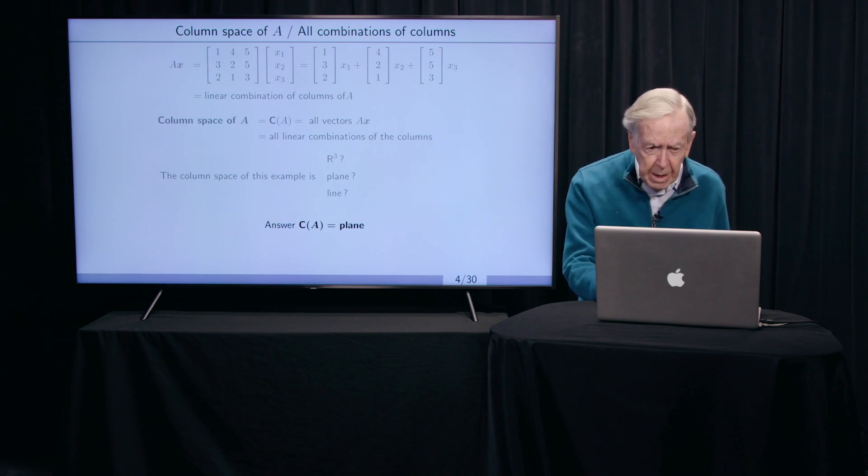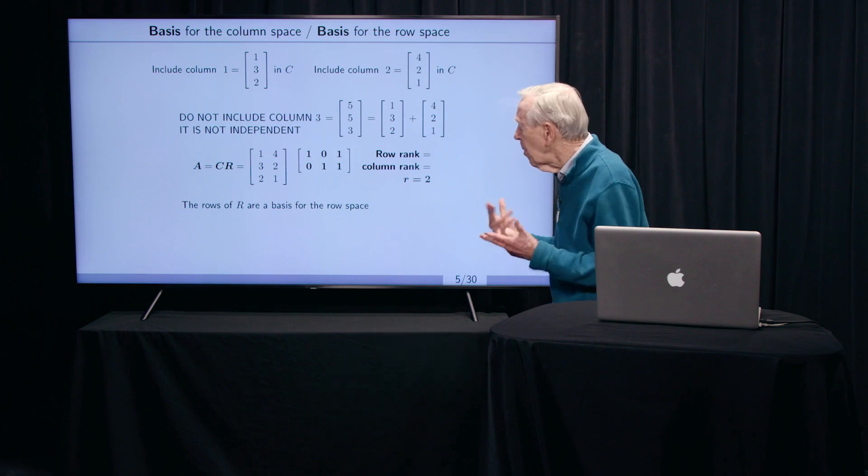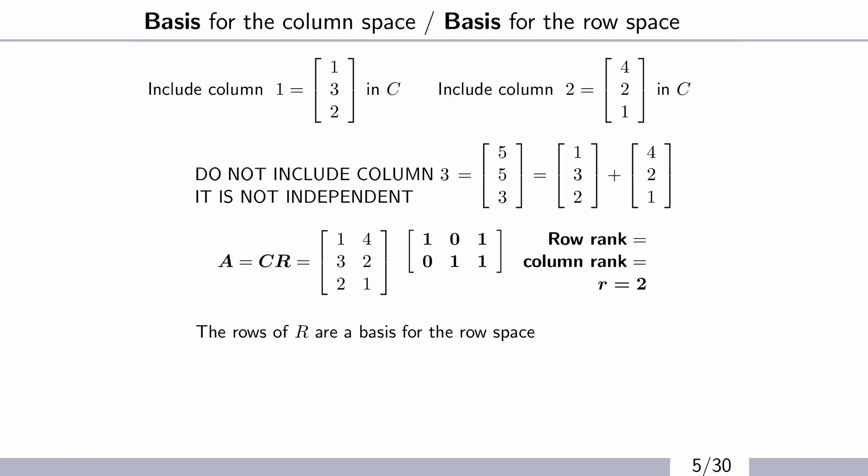So that's the column space for this matrix. We kept column 1, and we kept column 2, because you remember those two columns, the first two, were different. They went in different directions. We did not keep the third column, because it was just the sum of the first two. It's on the plane. Nothing new. So the real meat of the matrix A is in the column matrix C that has just the two columns. And what about R?